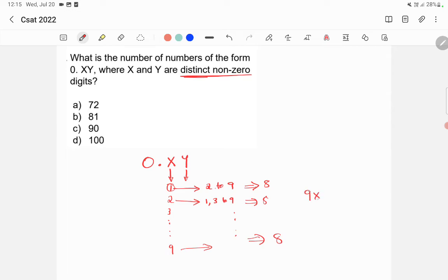So answer is 9 into 8 is equal to 72. Option A is the right answer.